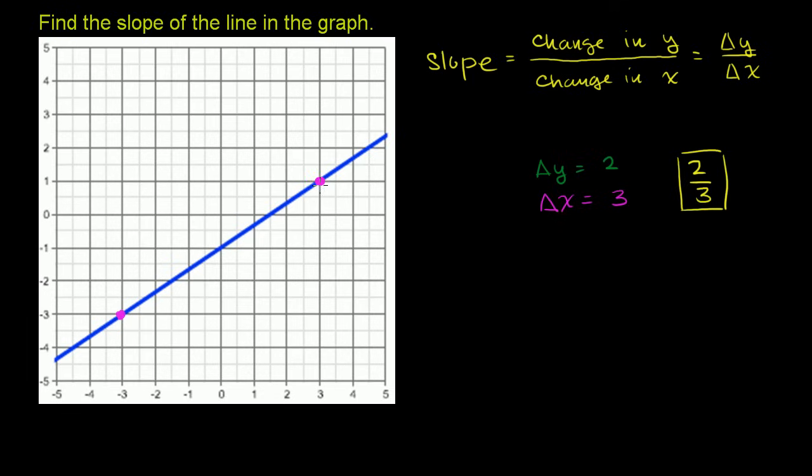So the change in y, I am going down by how many units? 1, 2, 3, 4 units. So my change in y in this example is negative 4. I went from 1 to negative 3. That's negative 4. That's my change in y. Change in y is equal to negative 4.